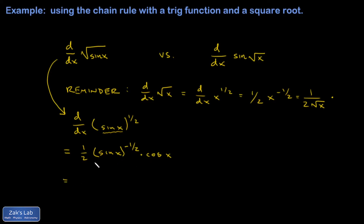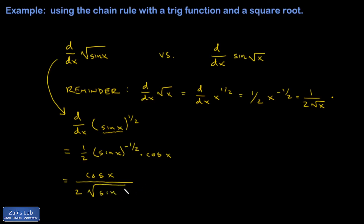So I could clean it up a little, writing it all as one big fraction. I'll put the cosine in the numerator, there's a 2 in the denominator, and then this is 1 over square root sine x. So the result is cosine x over 2 root sine x.